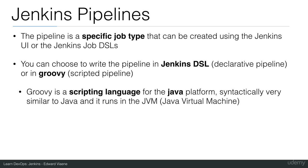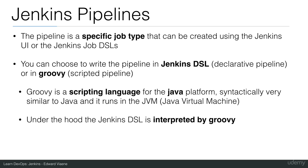Groovy is a scripting language for the Java platform, syntactically very similar to Java, and it runs in the JVM — the Java Virtual Machine. So it's basically Java, but in scripting form. Under the hood, the Jenkins DSL is also interpreted by Groovy. So even if you write the declarative pipeline, Groovy is still running in the background.